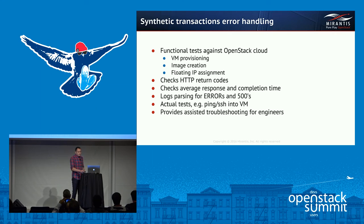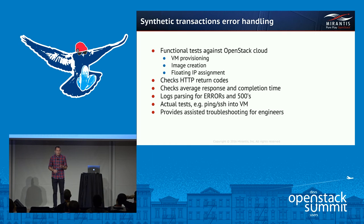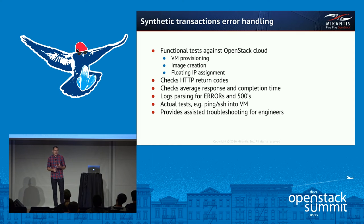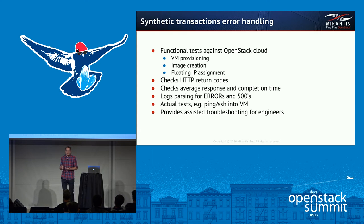We also use synthetic transactions, which are functional tests against our OpenStack cloud — like VM provisioning, image creation, and floating IP. These check HTTP codes and things like ping and SSH. If a problem occurs, the synthetic transaction triggers an event to StackStorm, and StackStorm provides assisted troubleshooting to debug those issues — gathering logs, checking load balancers, and providing some graphs.